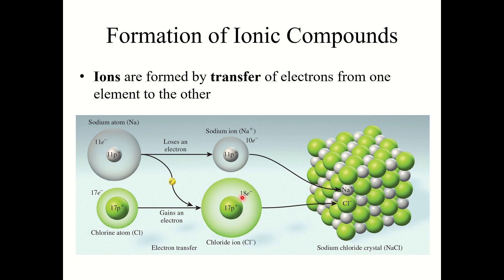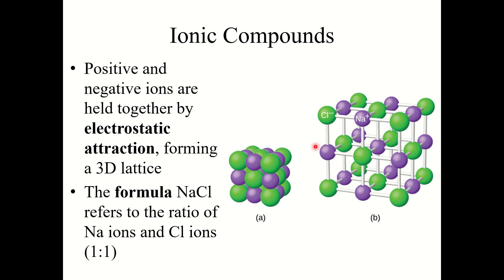So now we've got sodium ions and chloride ions, and these two ions bind together because of the electrostatic attraction — because opposite charges attract one another. This is what forms the sodium chloride crystals that we see in table salts. Positive and negative ions are held together by electrostatic attraction, which forms a three-dimensional crystal lattice structure. The formula NaCl simply refers to the ratio of sodium ions and chloride ions — it just refers to the ratio of the ions, not the bonding itself.